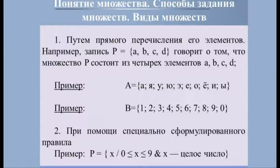Знак амперсанд означает союз «И». Допускается запись, где вместо амперсанда ставится запятая, точка с запятой, либо вместо наклонной черты используется прямая черта или точка. Одно и то же множество может быть задано с помощью различных характеристических свойств. Например, множество квадратов можно задать так: A = {x | x — ромб с прямыми углами}, или A = {x | x — прямоугольник с равными сторонами}.